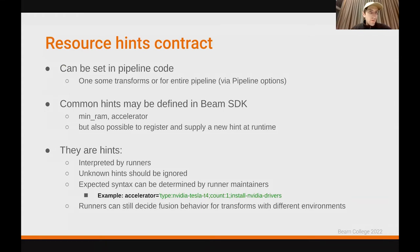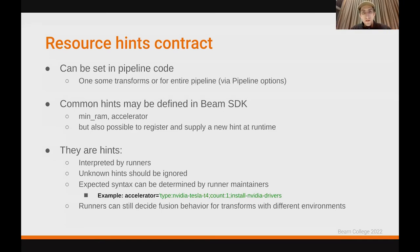Let's talk about the contract behind resource hints and why they are called hints. Users can set hints in the pipeline either on parts of the pipeline — on some transforms — or on the entire pipeline, for example by specifying a pipeline option that would apply to the entire pipeline graph. Some of the common hints may be defined in the Beam SDK itself. We currently define two resource hints: one to specify memory requirements and another to specify an accelerator.